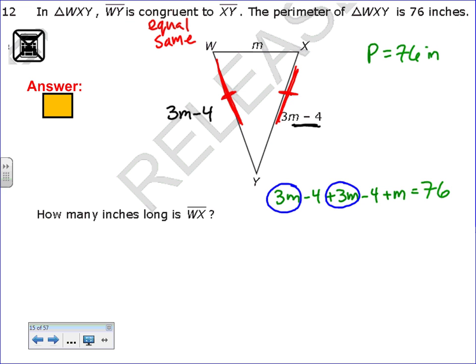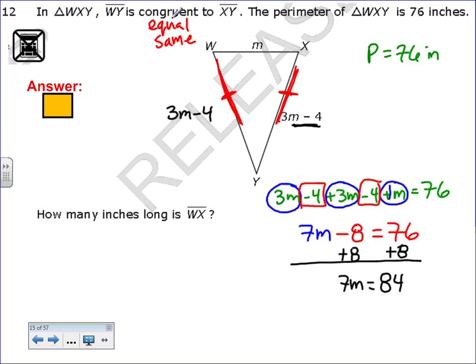Now I need to combine like terms. 3N plus 3N plus 1N makes it 7N. Negative 4 plus negative 4 makes it negative 8. From here, I just need to solve for N. I'm going to add 8 to both sides to get N by itself. That means 7N equals 84. Now I need to divide both sides by 7, so I can get N by itself. 7 goes into 84 twelve times. So that means that N is equal to 12.